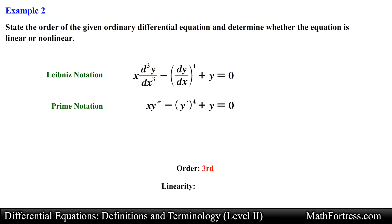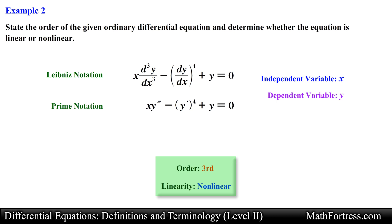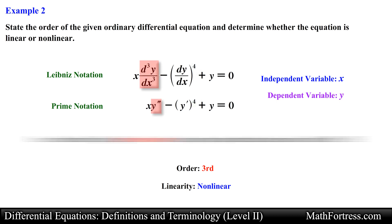Next let's check if this ODE is linear. The third derivative is raised to the power of 1, so it is linear in form. However, looking at the first derivative, we see it is being raised to the power of 4. This automatically makes the ODE nonlinear, so we classify it as a third order nonlinear ODE. A common mistake is to use the exponent 4 to classify the order. Remember, it is the highest derivative, not the exponent, that determines the order.